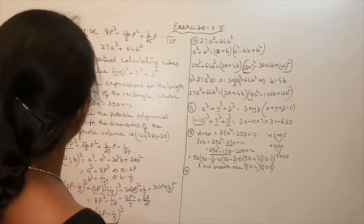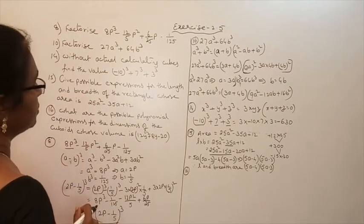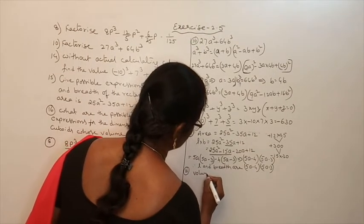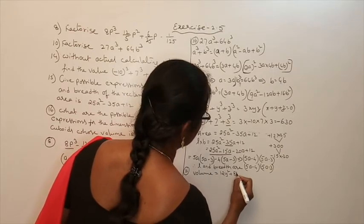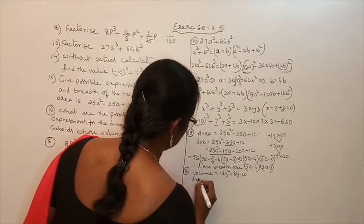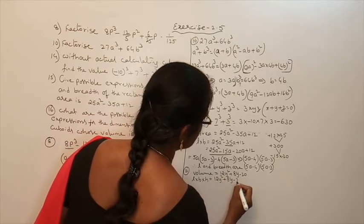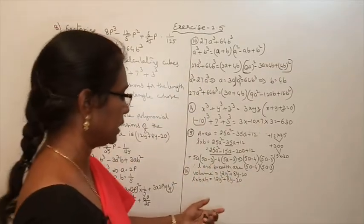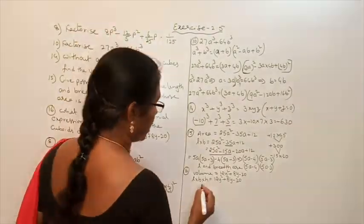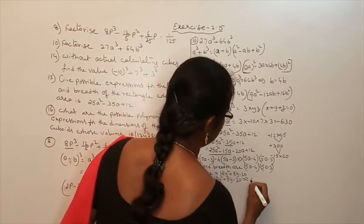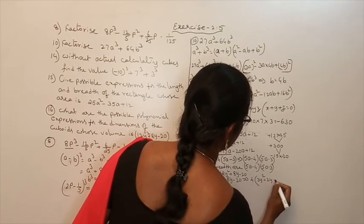Next: what are the possible polynomial expressions for the dimensions of a cuboid whose volume is 12y² plus 8y minus 20? Volume equals L times B times H, so L times B times H equals 12y² plus 8y minus 20. We need three factors. First, take 4 as common since 4 goes into 12, 8, and 20, giving 4(3y² plus 2y minus 5).